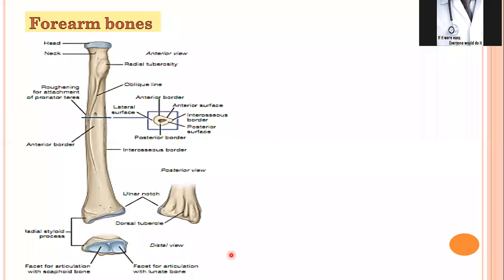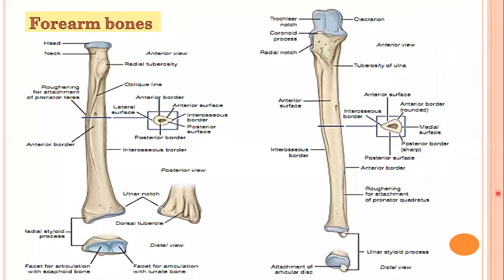Now looking at the ulna: this is the upper end of ulna. At the upper end, there is the trochlear notch — the olecranon and coronoid process surfaces of ulna. This trochlear notch is involved in the elbow joint. On the lateral side of ulna, there is a notch called the radial notch. The radial notch and the head of radius form the superior radio-ulnar joint.